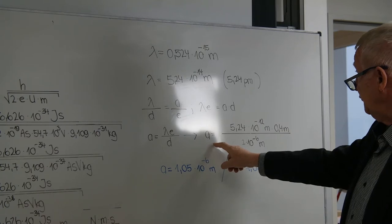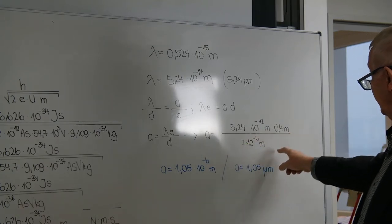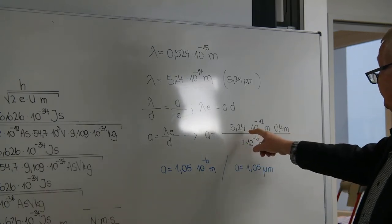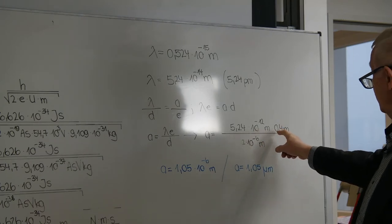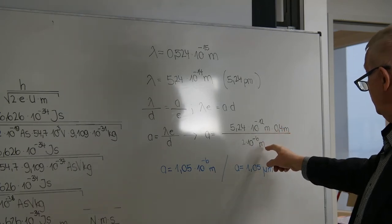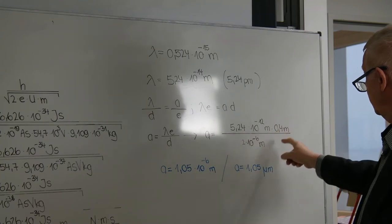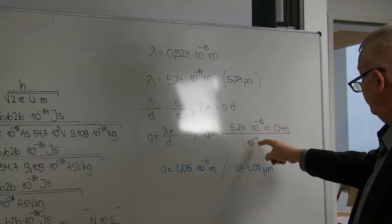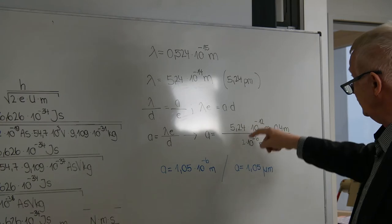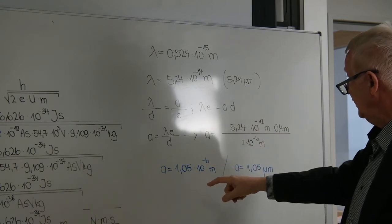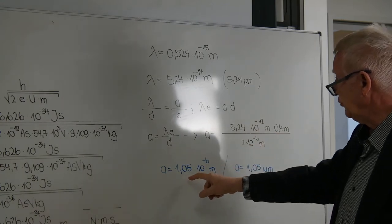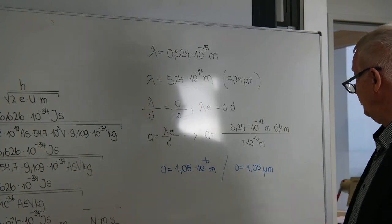So we obtain for A, values inserted again, here we must have the wavelength, and calculated accordingly. Here we have minus 12, there we have minus 6, so that's minus 6. So we arrive at a value of 1.05 × 10⁻⁶ meters, which is 1.05 micrometers.